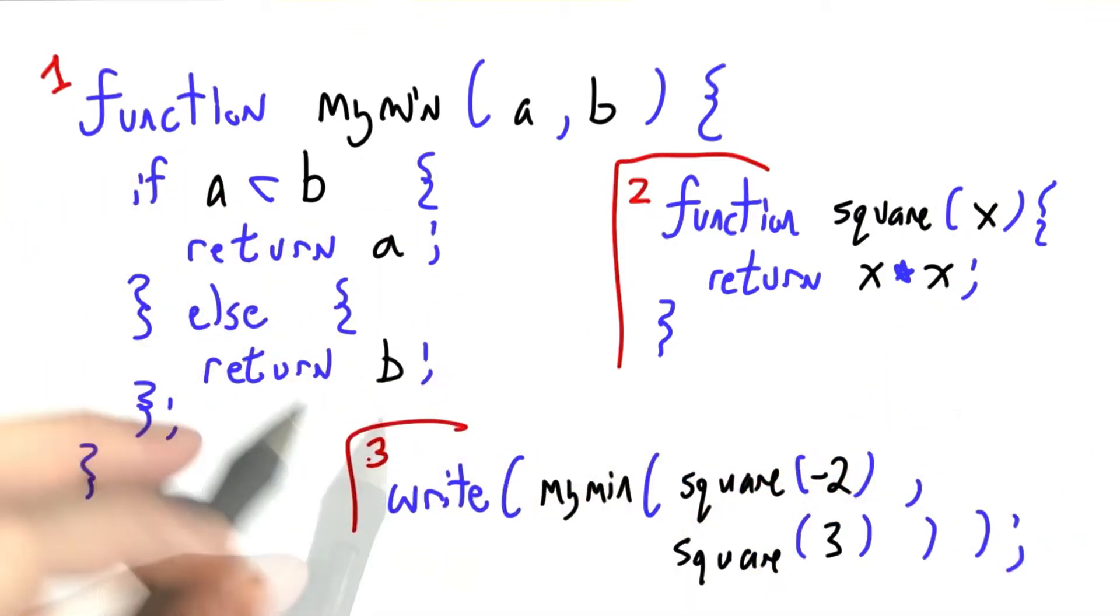And then over here, number three, a statement. We're calling write, or if you prefer, document.write, to display the result of calling mymin on the square of negative two and the square of three. So in essence, what we're trying to figure out is which is smaller, negative two squared or three squared? And then we're going to print out that result.